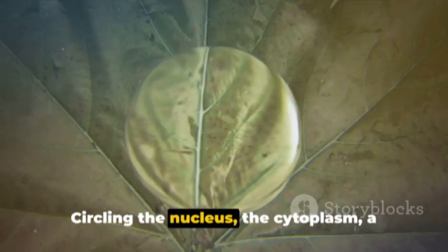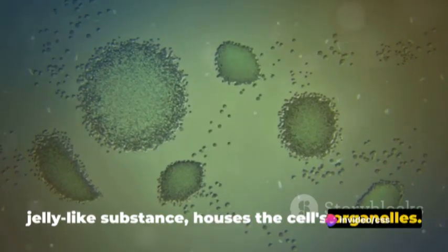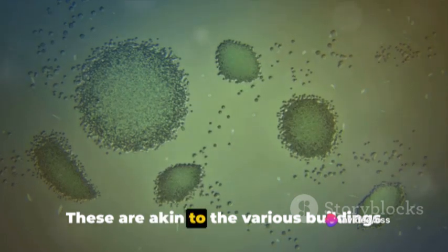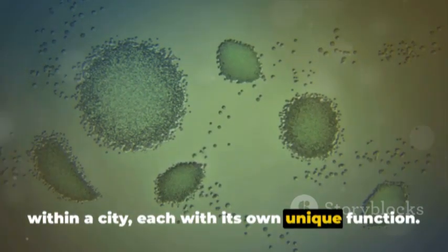Circling the nucleus, the cytoplasm, a jelly-like substance, houses the cell's organelles. These are akin to the various buildings within a city, each with its own unique function.